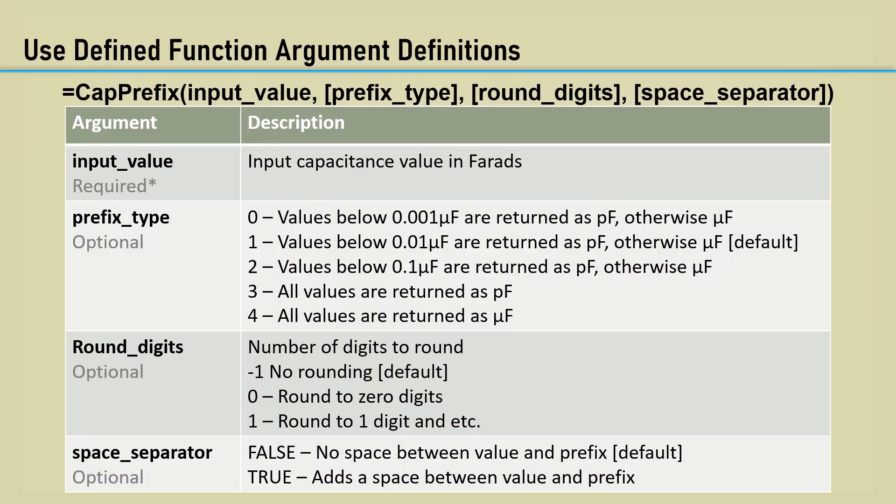Instead of using the engineering prefix function we made in an earlier video, we are going to write one that does not return nano or milli, just micro or pico in the various ways like the datasheets.